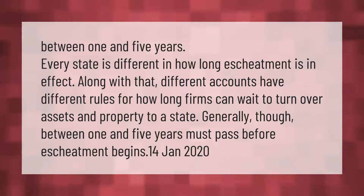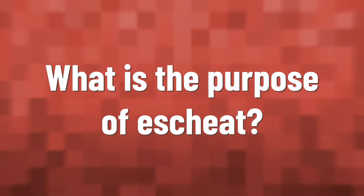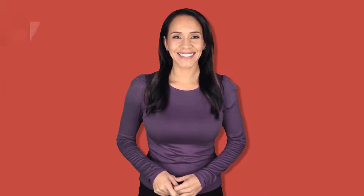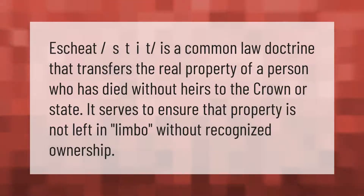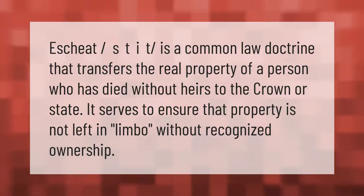Escheat is a common law doctrine that transfers the real property of a person who has died without heirs to the crown or state. It serves to ensure that property is not left in limbo without recognized ownership.